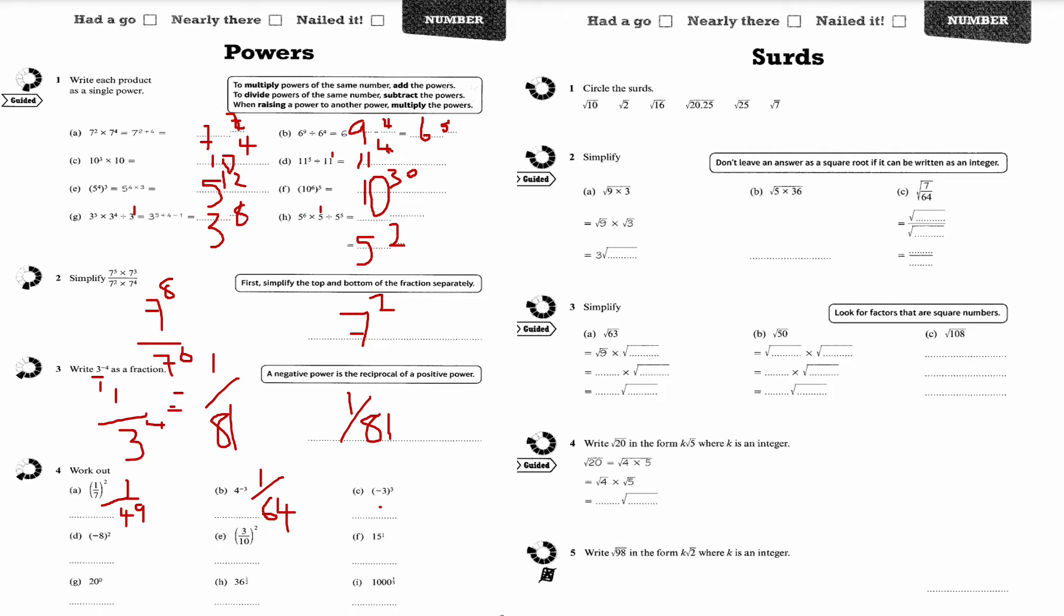Minus 3 to the power of 3 is minus 27, because it's minus 3 times minus 3 times minus 3. Minus 8 all squared is minus 8 times minus 8, which is positive 64.